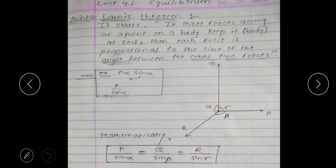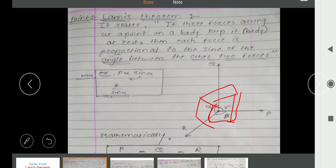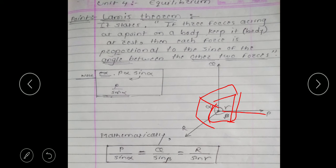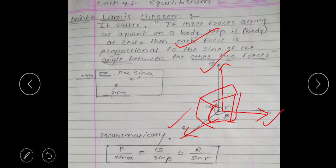To explain this, consider one body with three forces acting on it — force P, force Q, and force R. If these three forces are acting at a point on a body and the body is not moving, meaning it is in an equilibrium position, then each force — P, Q, and R — is proportional to the sine of the angle between the other two forces, i.e., the opposite angle.